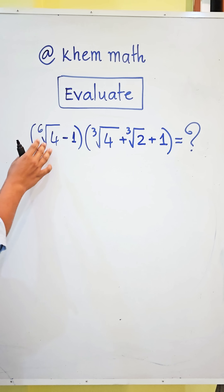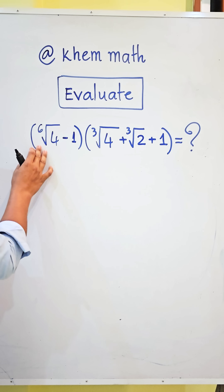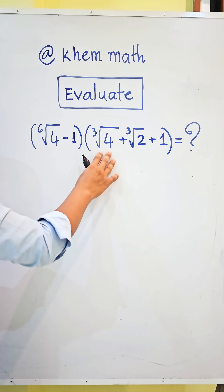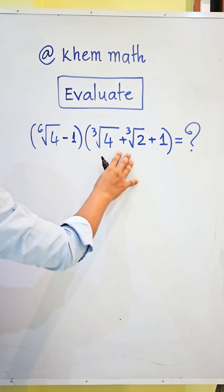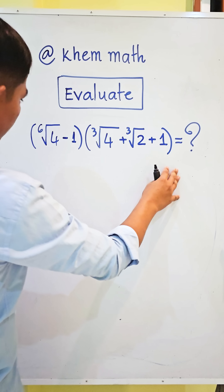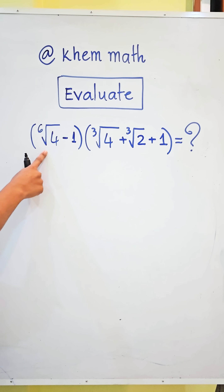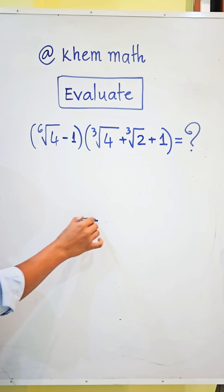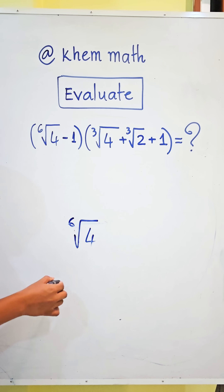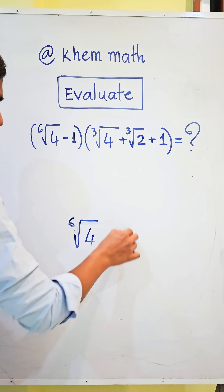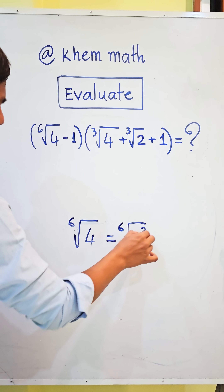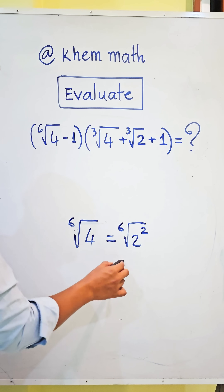Evaluate the sixth root of 4, minus 1, times the quantity: cube root of 4 plus cube root of 2 plus 1. Let's view the formulas. The sixth root of 4 can be rewritten as the sixth root of 2 squared.